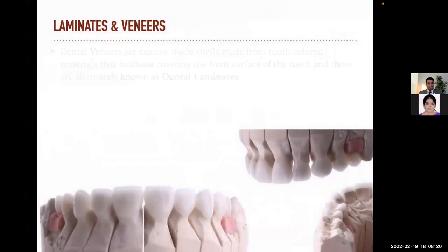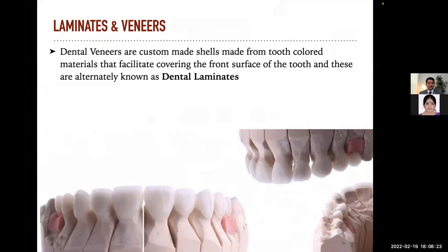So why laminates and veneers? Definitely, it's an art and science of dentistry. We say laminates and veneers because for everyone they are the same, but it is defined in contemporary cosmetic dentistry. Dental veneers are custom-made shells made from tooth-colored materials that facilitate covering the front structure of the tooth. These are alternatively known as dental laminates, but there is a difference. Many dentists get confused between dental laminates and veneers and think these both are the same, but in cosmetic dentistry, both are different.